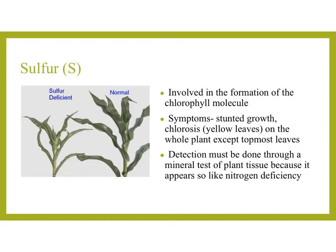Sulfur is involved in the formation of the chlorophyll molecule. Symptoms include stunted growth and chlorosis — yellow leaves on the whole plant except the topmost leaves. Detection must be done through a mineral test of plant tissue because sulfur deficiency appears very similar to nitrogen deficiency. So looking at the plant you might think it's a nitrogen deficiency, but a mineral test would determine it's actually low in sulfur.